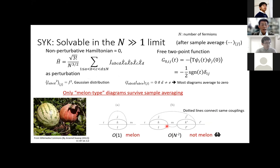The SYK model is said to be solvable, but in what sense? In the large-N limit, quantities such as the two-point Green's function can be exactly calculated after sample average. We set the non-perturbative Hamiltonian to zero and consider the Feynman diagram expansion with the SYK Hamiltonian as the perturbation. The free two-point function is diagonal in the Majorana fermion index, and the product of two couplings averages to zero if at least one index differs, so most diagrams average to zero. Only Melon-type diagrams survive after averaging over the couplings.